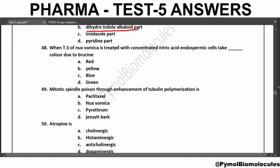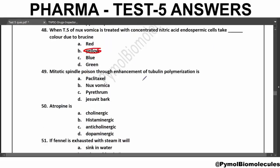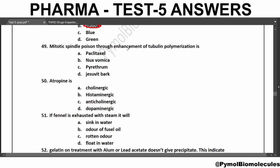When a transverse section of Nux vomica is treated with concentrated nitric acid, the endospermic cells take a yellow color due to the presence of Brucine. When the TS of Nux vomica is treated with Mandelin's reagent, it gives a purple color due to the presence of Strychnine. The mitotic spindle poison through enhancement of tubulin polymerization is Paclitaxel. Atropine is anticholinergic.